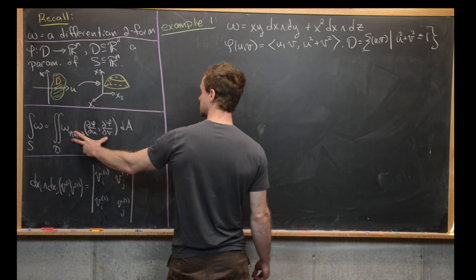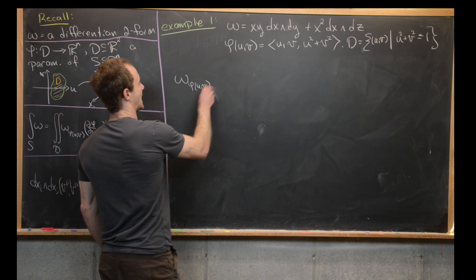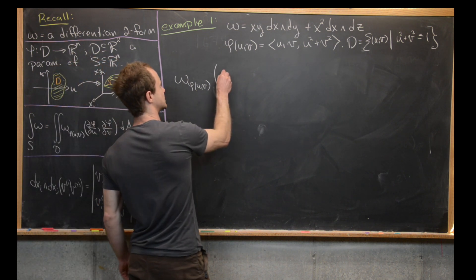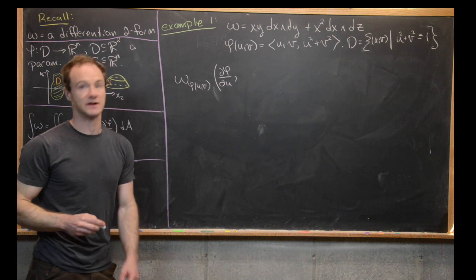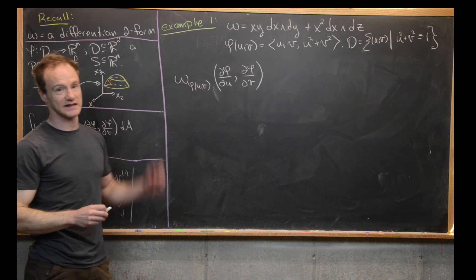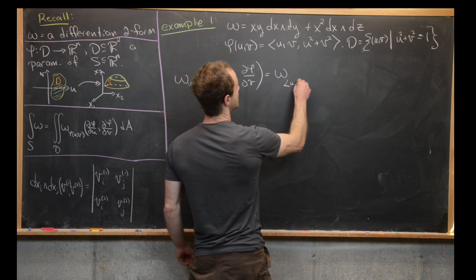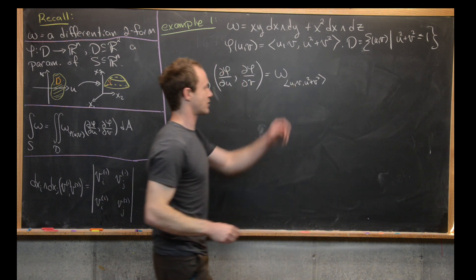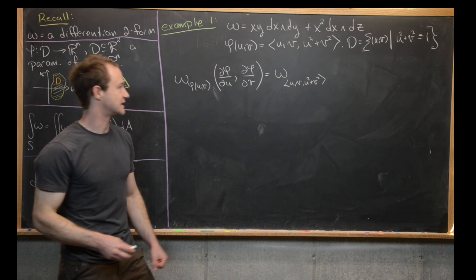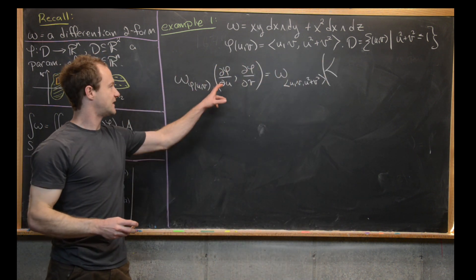Let's go ahead and get at it. We want to take omega evaluated at a point on the surface, so that's phi(u,v), and then further evaluated at two vectors tangent to the surface — you can think of them as vector fields. So here we have ∂phi/∂u and ∂phi/∂v. That's going to be omega evaluated at the point (u, v, u²+v²). Everywhere we see x, we stick u; everywhere y, we stick v; everywhere z, we stick u²+v². And the final evaluation will be at these two vector fields defined by these derivatives.